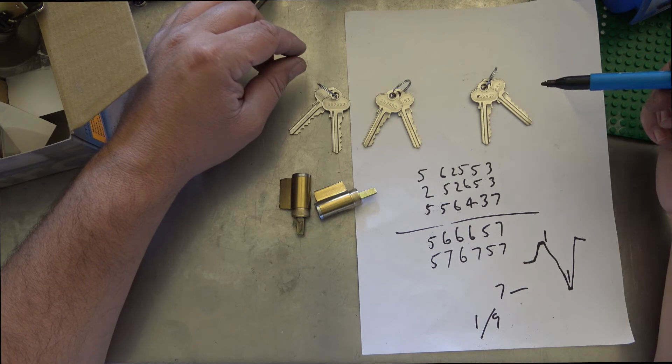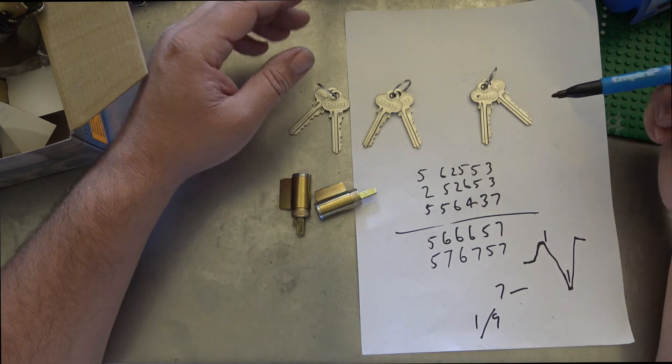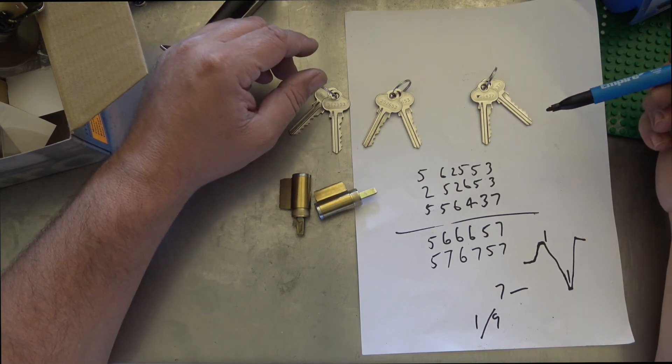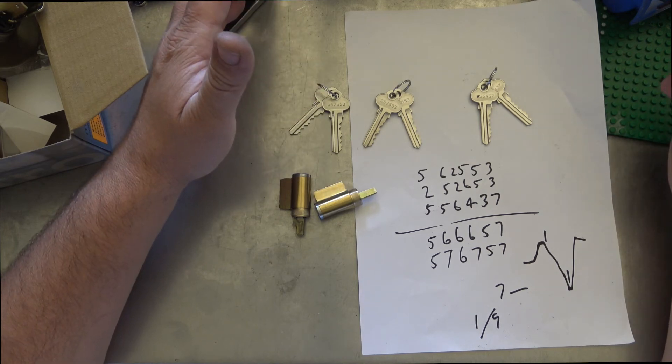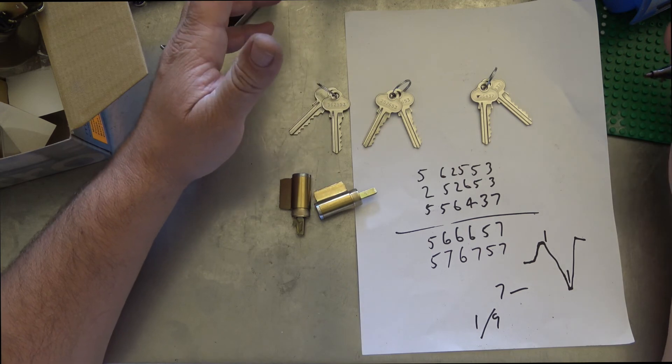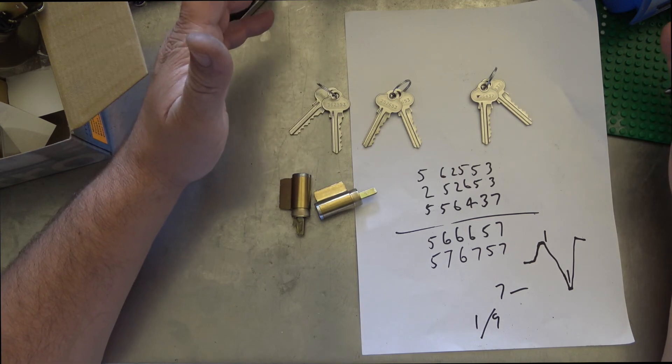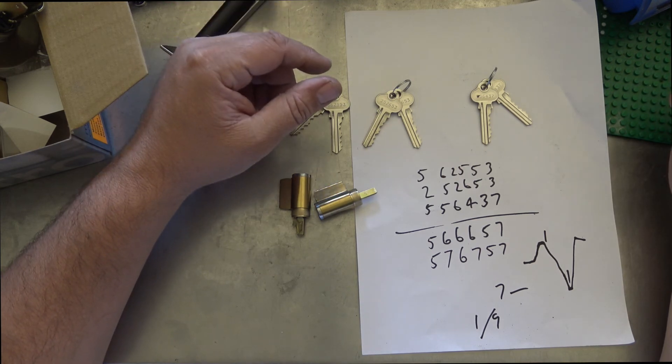So in this particular example, yes I do, because I'm keying alike, I do have to key alike one extra set of cylinders. Okay, granted, but at the end of the day the customer's going to be more happy because they're getting two keys with each lock rather than two keys in total. So it's a better product for the customer.